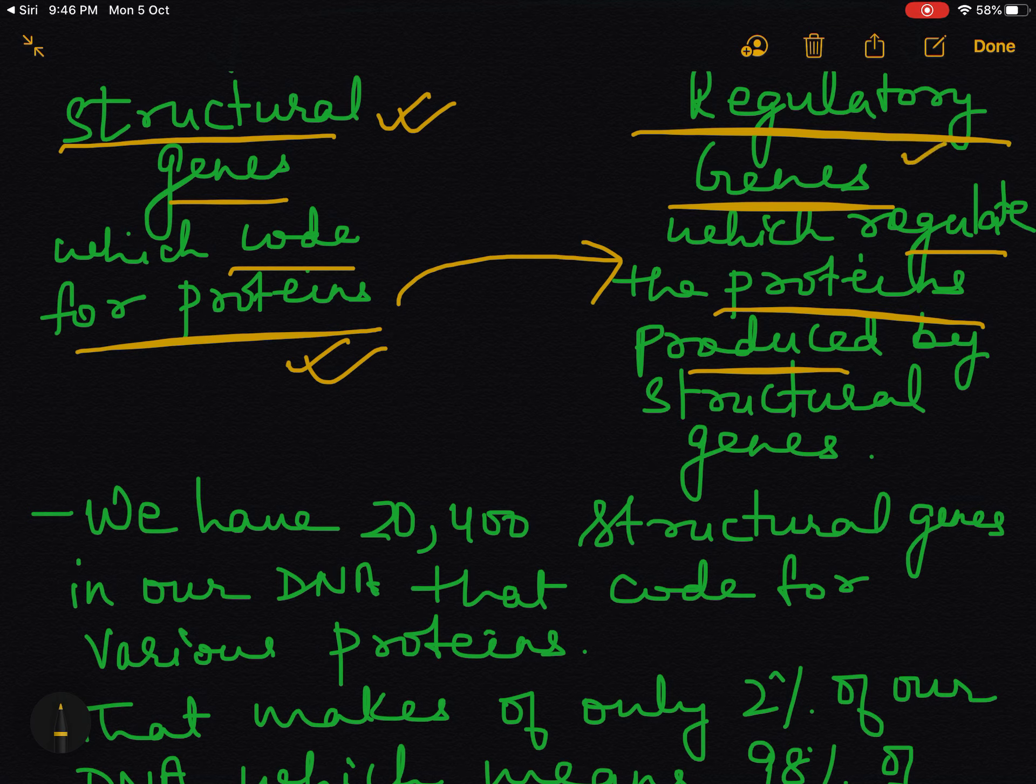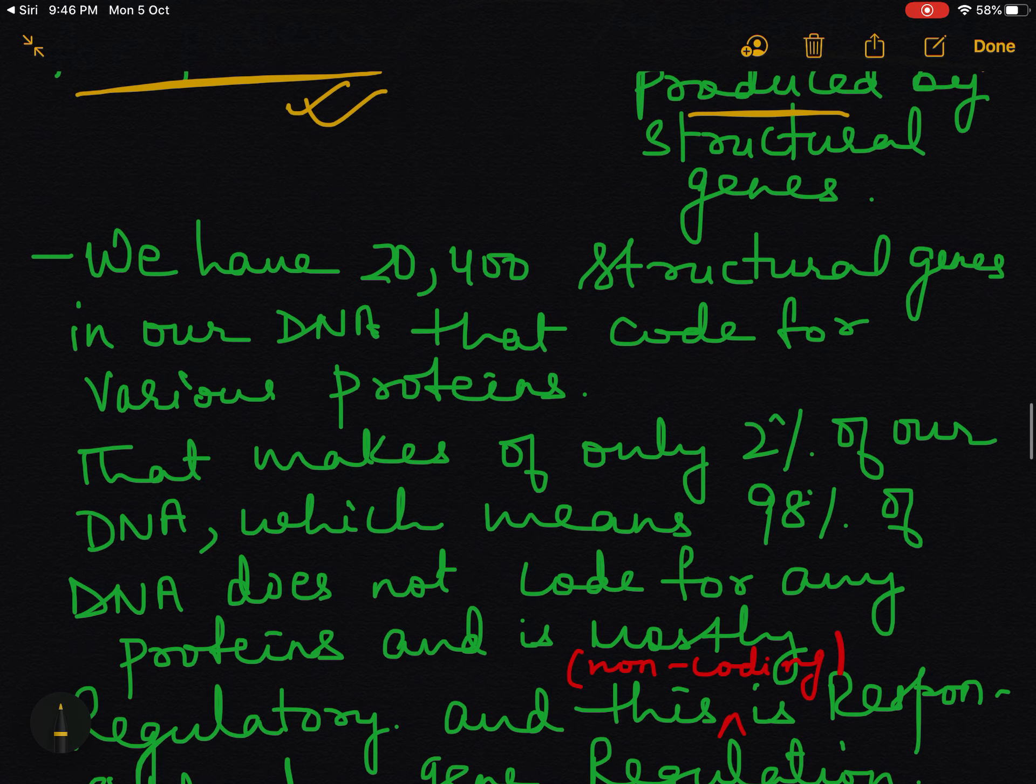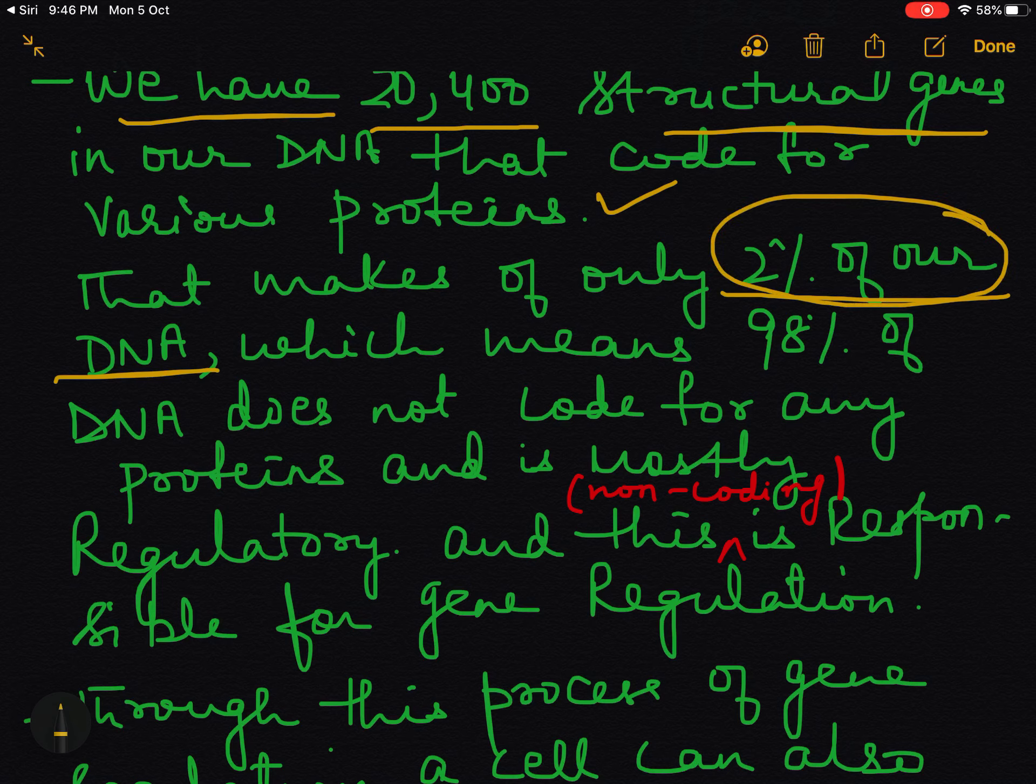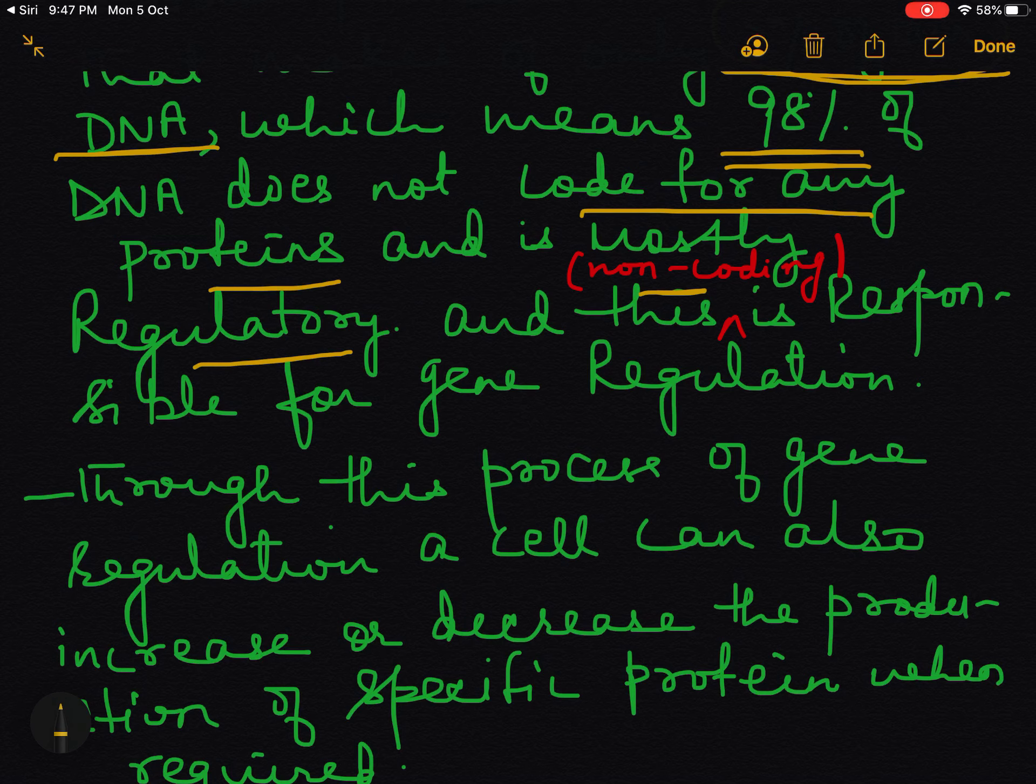That regulation is being taken care by these genes which are called regulatory genes. We have 20,400 structural genes in our DNA that code for various proteins. This means that only 2% of our DNA have structural genes. The remaining are responsible for gene regulation - non-coding genes responsible for regulatory purpose.